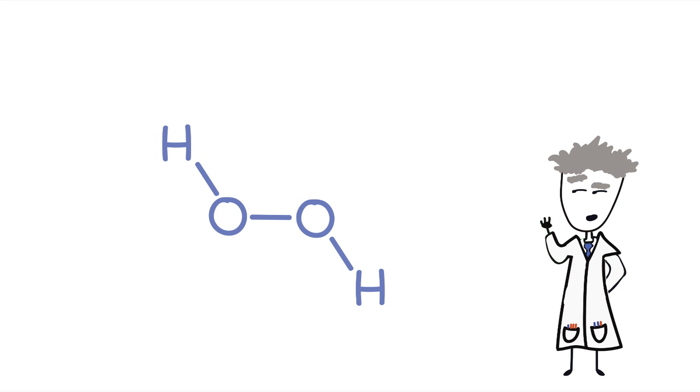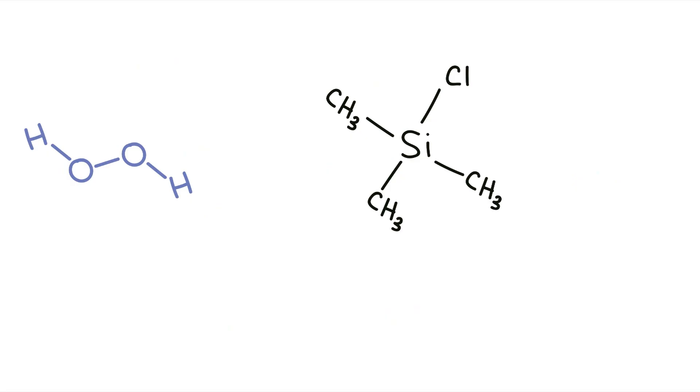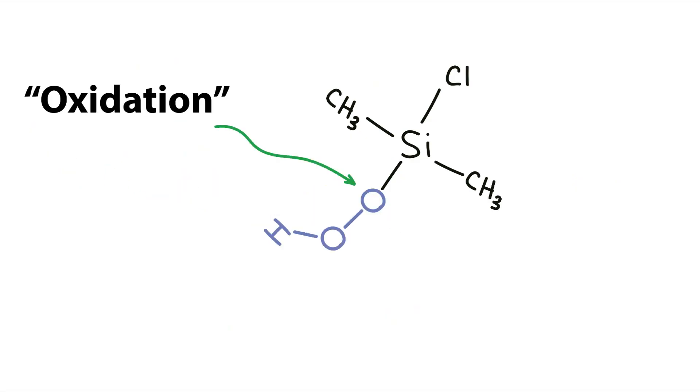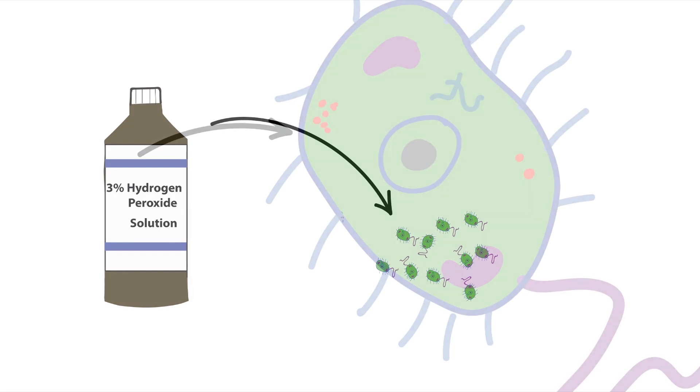Hydrogen peroxide is an oxidizing agent, and oxidizing agents make great disinfectants. They work by bonding their oxygen atoms to other molecules in a process known as oxidation. This oxidation changes the molecule's structure, giving it different properties, which is how peroxide kills bacteria.